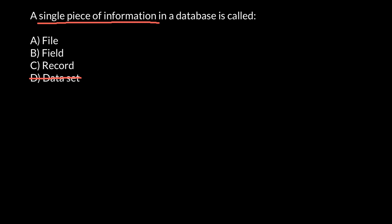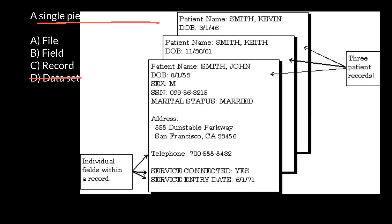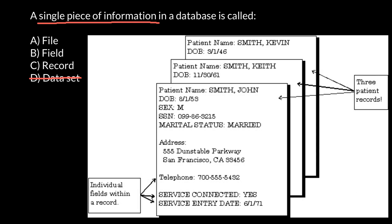Now we have to choose between 'file,' 'field,' and 'record.' If you take a look at this picture, you would know the hierarchy of information. Here is a record of the patient, and here is a field. For example, this field is called 'patient name: John Smith,' and this field is 'sex,' whether it is male or female, 'social security,' and so on. A collection of fields makes a record.